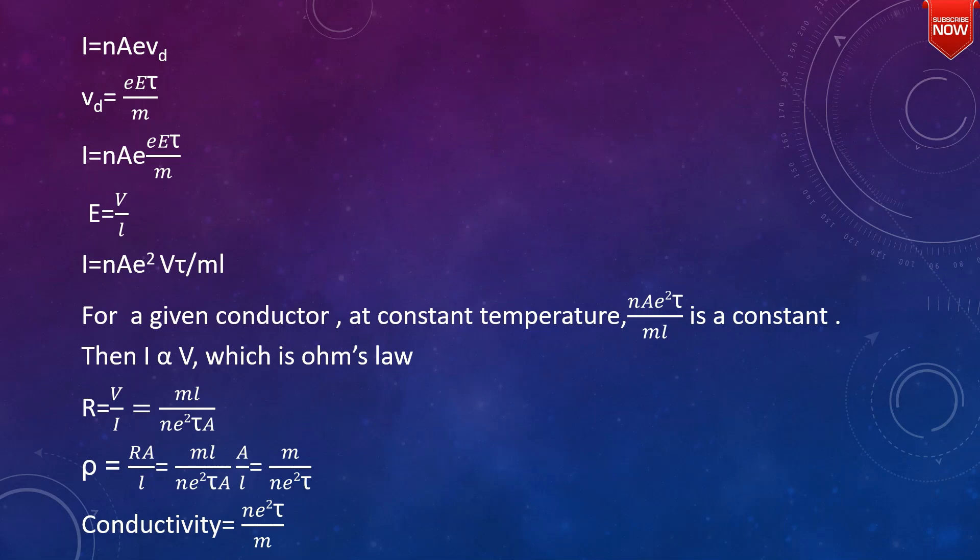The resistance equation gives R = V/I = mL divided by ne²τA. From this, we can define resistivity rho.